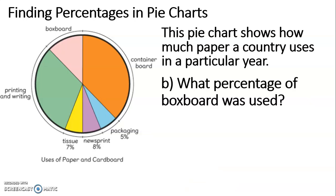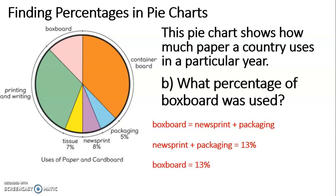Let's look at B — what percentage of box board was used? This is one of those questions where we can look visually. If you look at newsprint and packaging together, those segments are the same size as the pink segment of box board. If newsprint and packaging are 13%, then box board is also 13%.